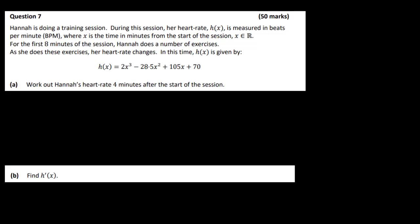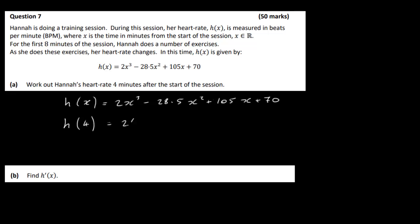We just have to write down the function — it's 2x cubed minus 28.5x squared plus 105x plus 70 — and work out h of 4. All you've got to do is put 4 in there. So it's 4 squared plus 105 times 4 plus 70, and when you work that out you should get 162 beats per minute.